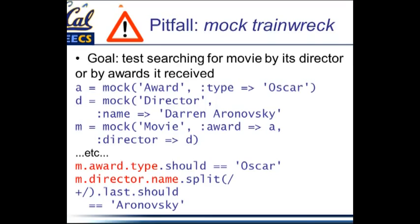This is a mock train wreck — you have to set up all of this state just to run the test. What that means is: if the director really matters on its own, or if the award type of the movie matters on its own, the movie class should give you a way to get those things without having to know the internals of the other object it depends on. When we talk about design patterns a little later in the course, we'll see this is an example of breaking an anti-pattern called inappropriate intimacy — not only do you know your friends, you know a little too much about your friends' friends.